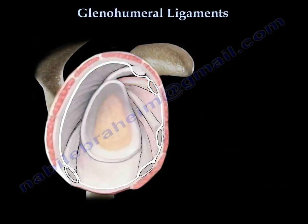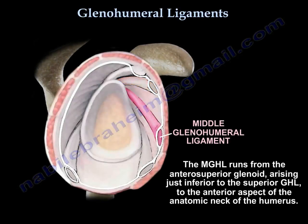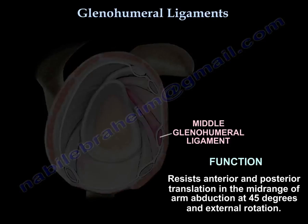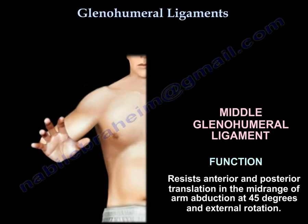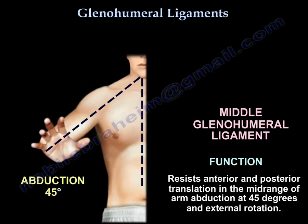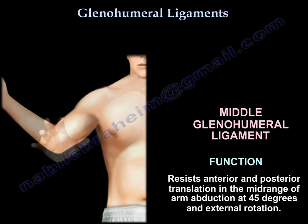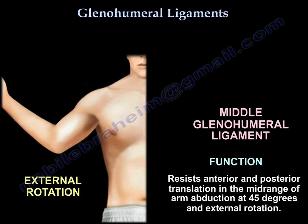The middle glenohumeral ligament runs from the anterior superior glenoid, arising just inferior to the superior glenohumeral ligament, to the anterior aspect of the anatomic neck of the humerus. Its function is to resist anterior and posterior translation in the mid-range of arm abduction at 45 degrees and external rotation.